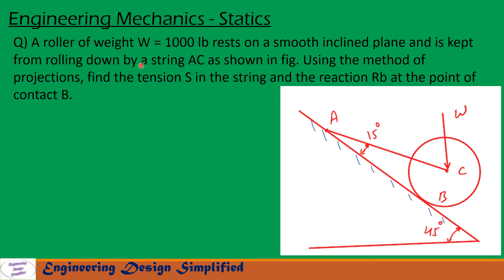Today's problem: a roller of weight W equal to 1000 lb rests on a smooth inclined plane and is kept from rolling down by a string AC, as shown in the figure. Using the method of projections, find the tension S in the string and the reaction RB at the point of contact B.